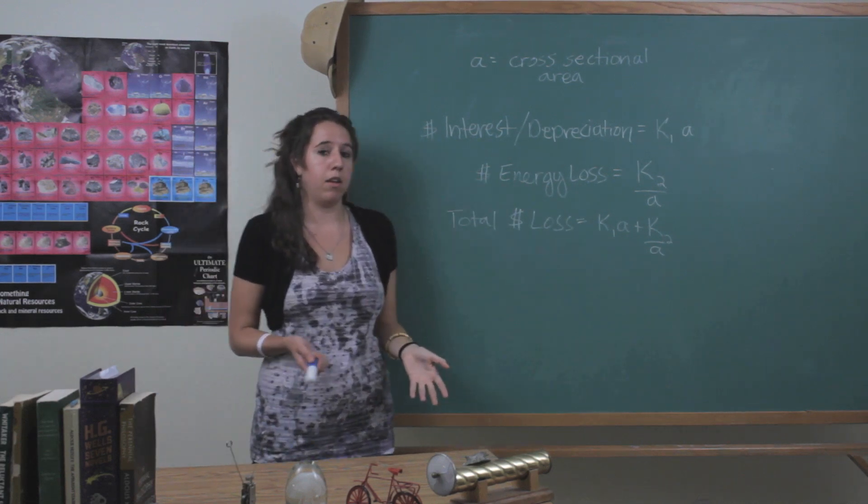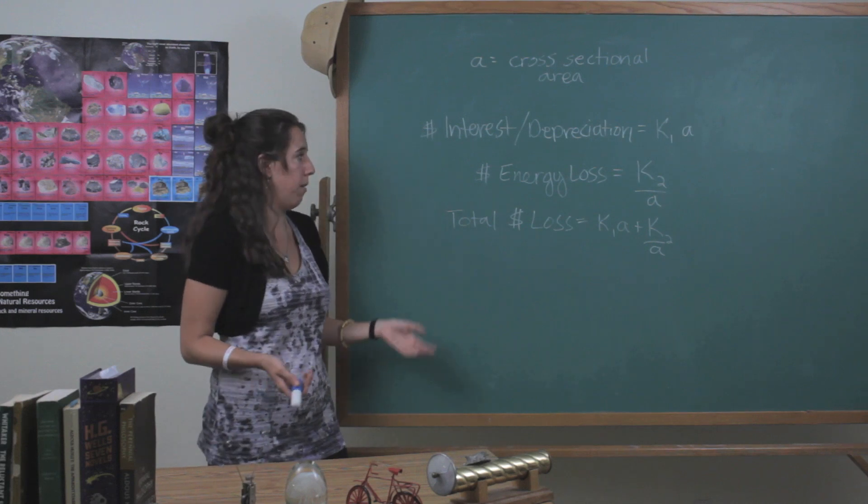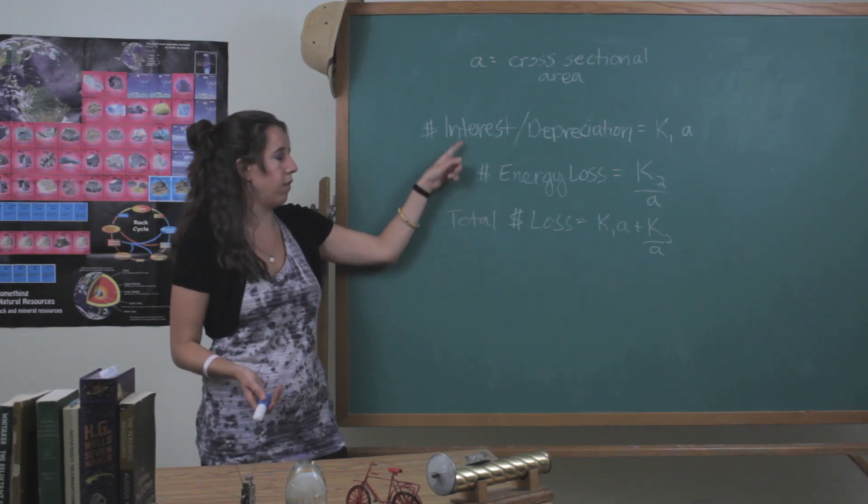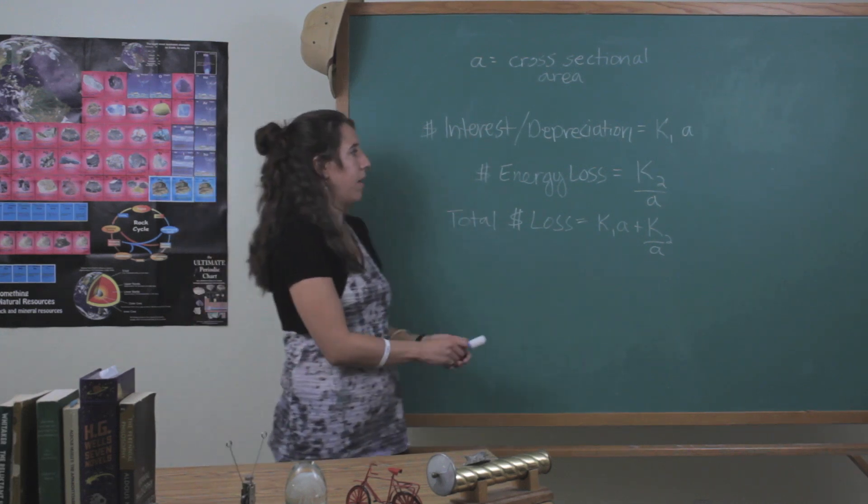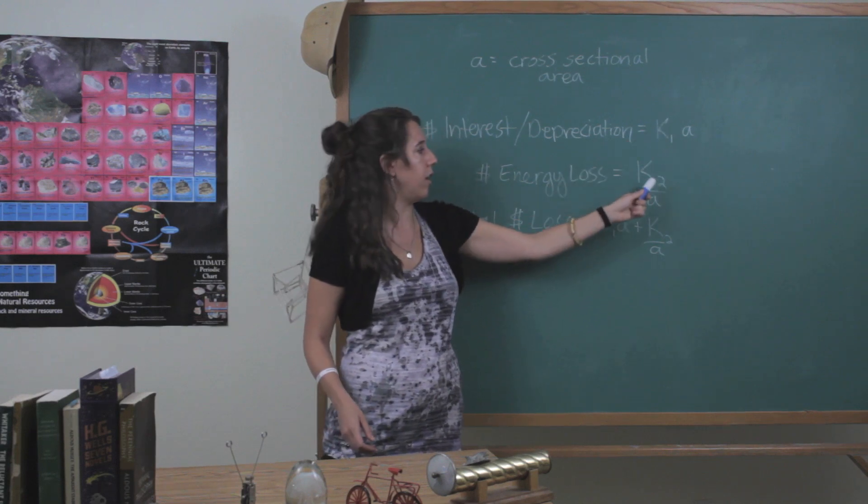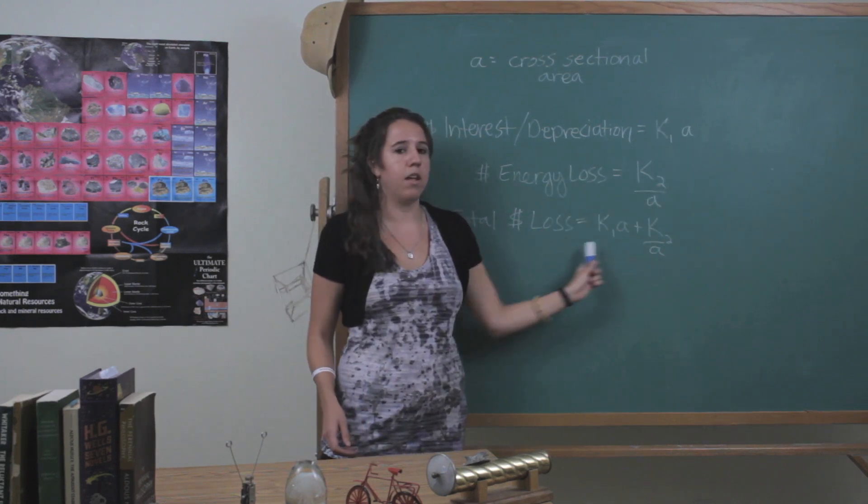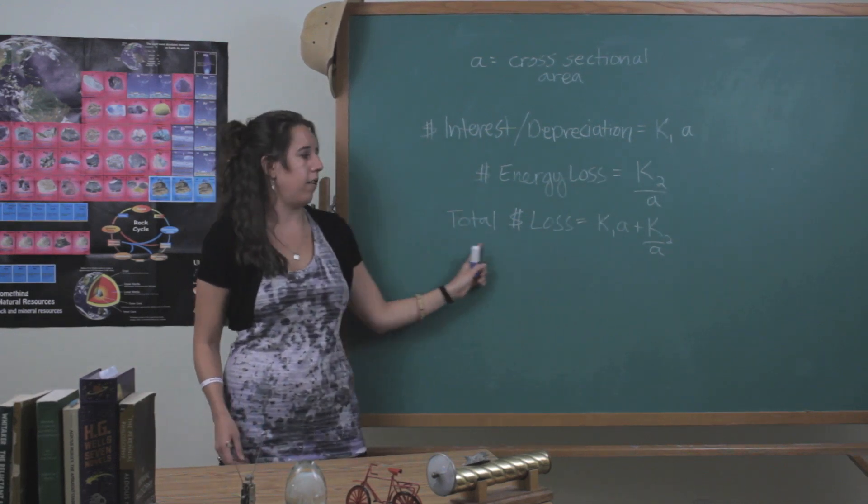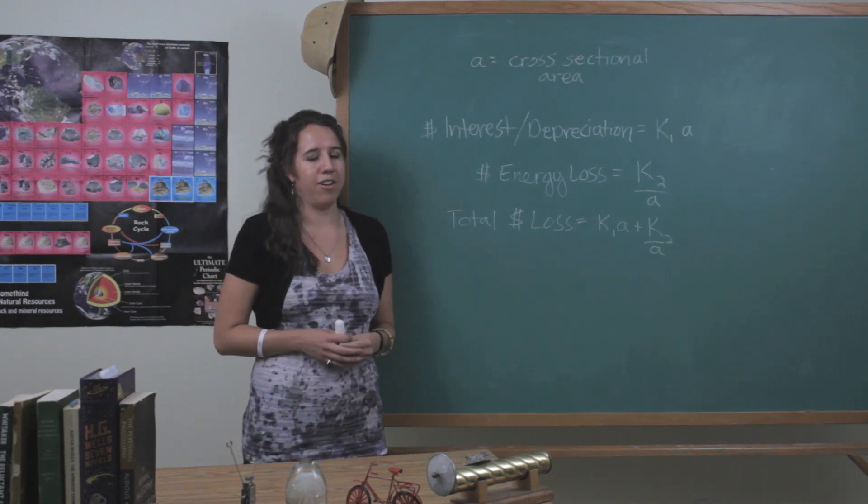And the total amount of money that you would lose on the conductor over time is going to be the sum of these two. So basically I've just taken this quantity and this quantity and added them to find the total money lost over time with your conductor.